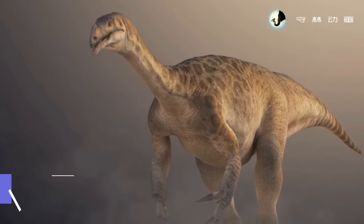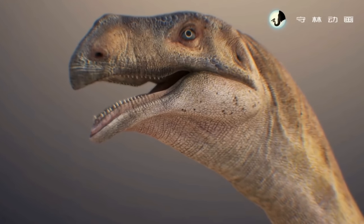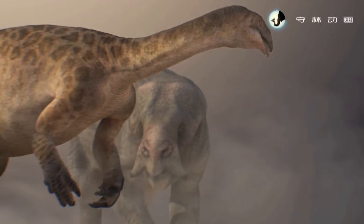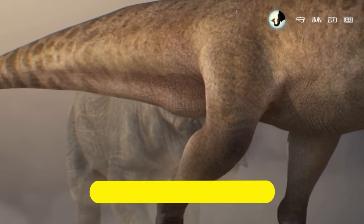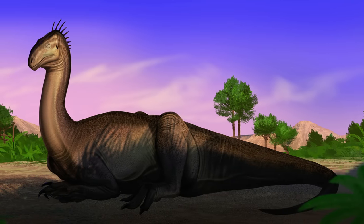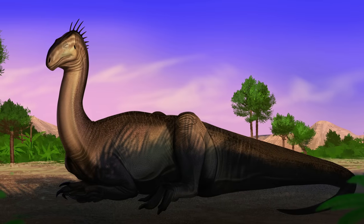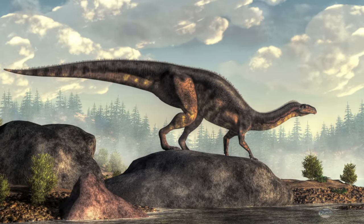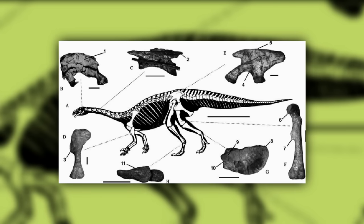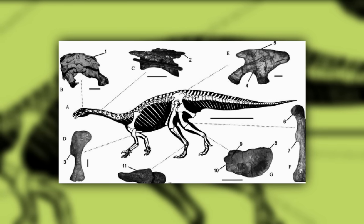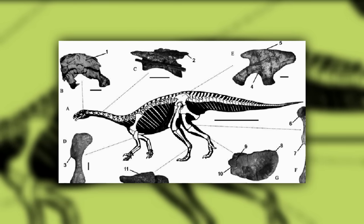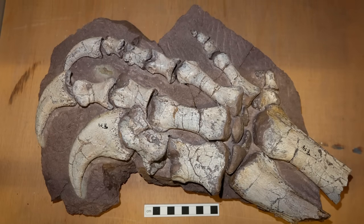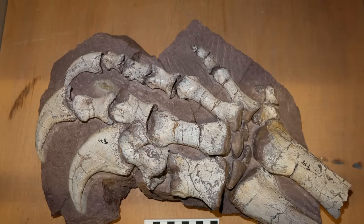Plateosaurus, probably meaning broad lizard, is a genus of plateosaurid dinosaur that lived during the late Triassic period, around 214 to 204 million years ago, in what is now Central and Northern Europe. Discovered in 1834 by Johann Friedrich Engelhardt and described three years later by Hermann von Meyer, Plateosaurus was the fifth named dinosaur genus that is still considered valid. It was a bipedal herbivore with a small skull on a long, flexible neck, sharp but plump plant-crushing teeth, powerful hind limbs, and short but muscular arms with grasping hands with large claws on three fingers, possibly used for defense and feeding.